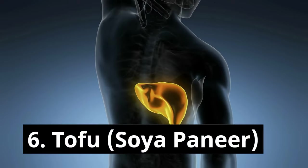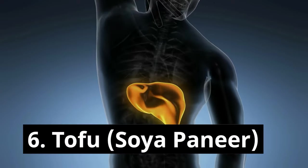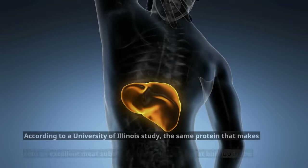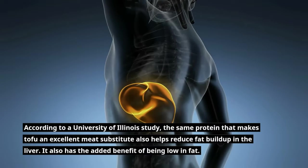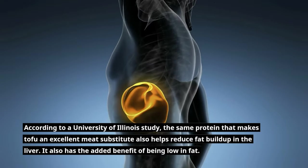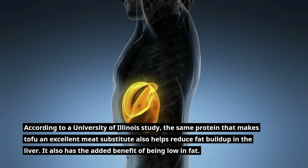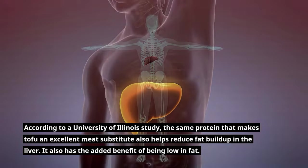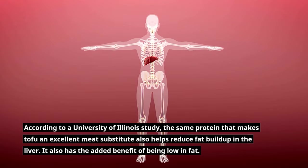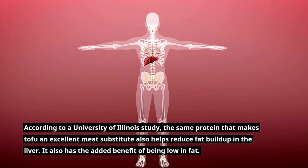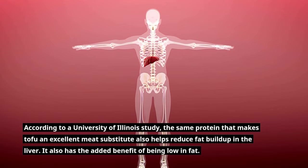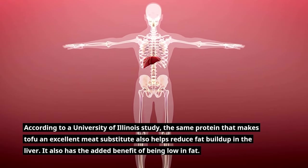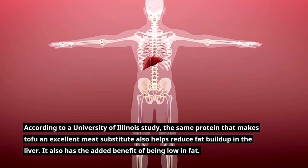Remedy 6: Tofu (soy paneer). According to a University of Illinois study, the same protein that makes tofu an excellent meat substitute also helps reduce fat buildup in the liver. It also has the added benefit of being low in fat.